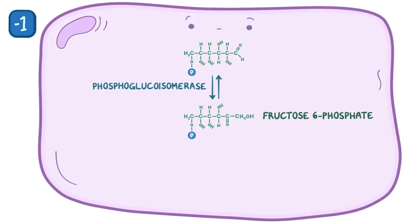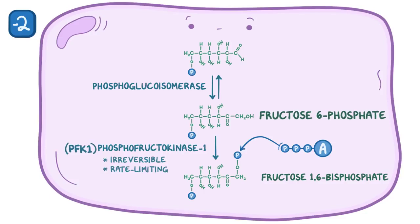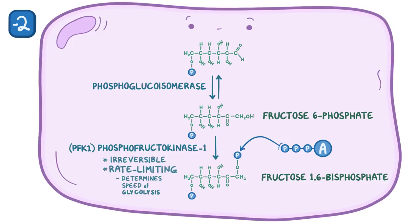Fructose-6-phosphate is then phosphorylated by the enzyme phosphofructokinase-1, or PFK1, which adds a phosphate group to the first carbon on the fructose molecule, making fructose-1,6-bisphosphate. This is the second irreversible reaction in glycolysis, and it also uses ATP as a phosphate source, so now we're at minus 2 on the energy counter. This reaction is considered the rate-limiting step of glycolysis, meaning that the speed at which PFK1 converts fructose-6-phosphate to fructose-1,6-bisphosphate determines the speed at which all of glycolysis happens.